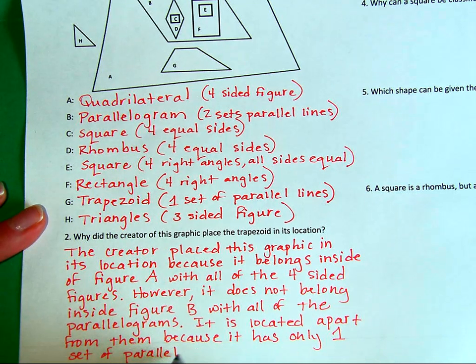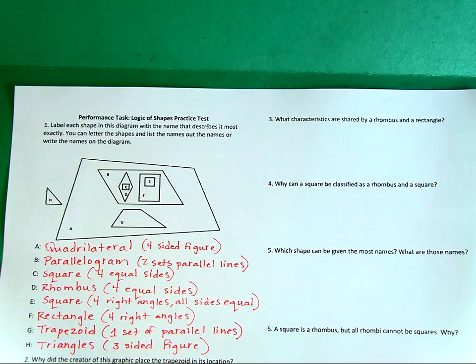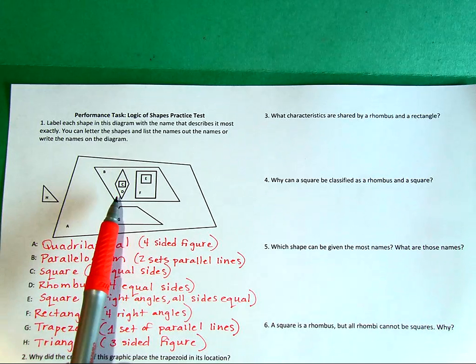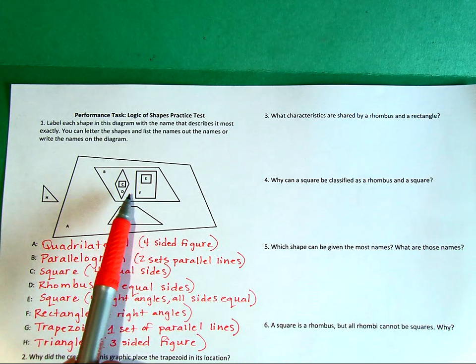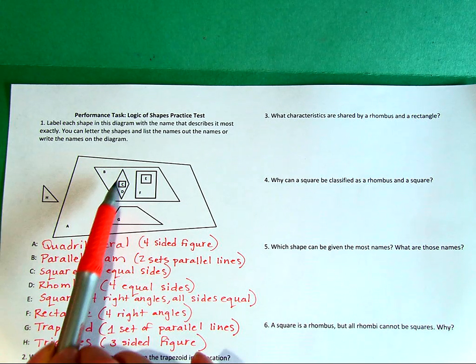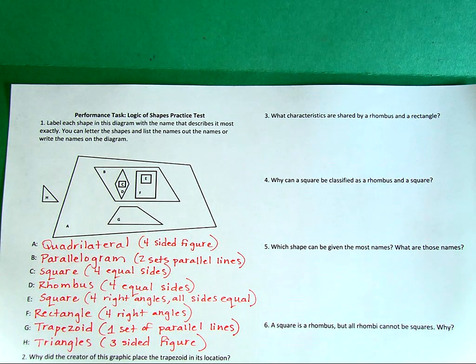Question three asks: what are characteristics shared by a rhombus and a rectangle? If I locate the rhombus and the rectangle in this graphic, I see that figure D is a rhombus and figure F is a rectangle, and both of these are located inside figure B, which we've already determined is a parallelogram. So the common characteristic is having two sets of parallel lines.